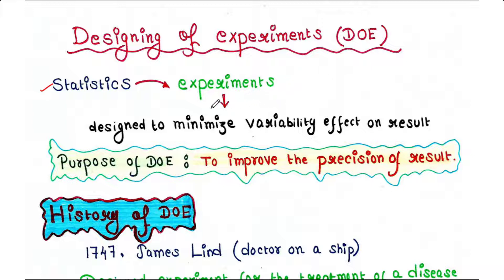Basically, statistics deals with numerous experiments and the experiment has to be designed to minimize the variability effect on results. If you don't design your experiments properly, the result would not be very precise. Hence the purpose of designing of experiments is to improve the precision of results.